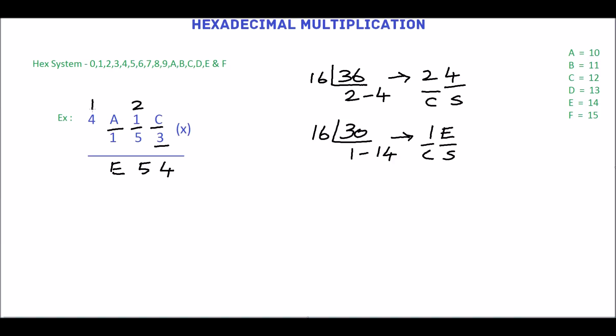Then multiply 3 by 4. 3 multiplied by 4 is 12. Then add carry 1. 12 plus 1 is 13. 13 is equivalent of D. Then multiply 4A1C by 5.